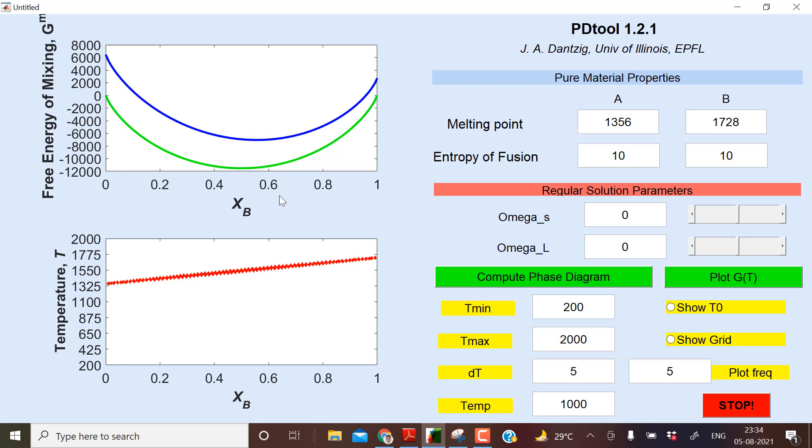Now, okay, now going to draw the phase diagram. So this is the free energy of mixing at temperature of 1000K.